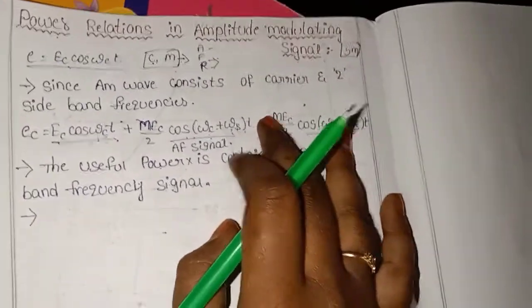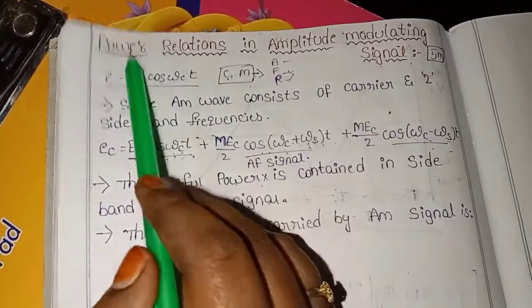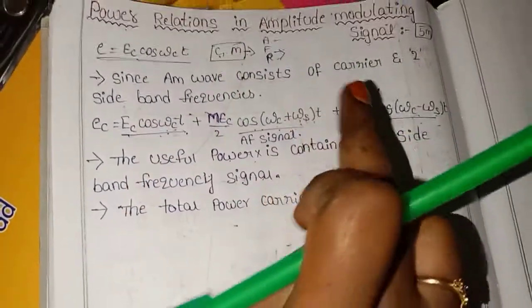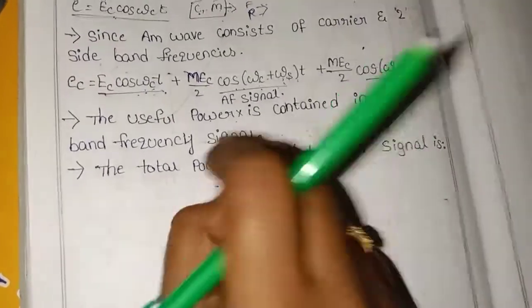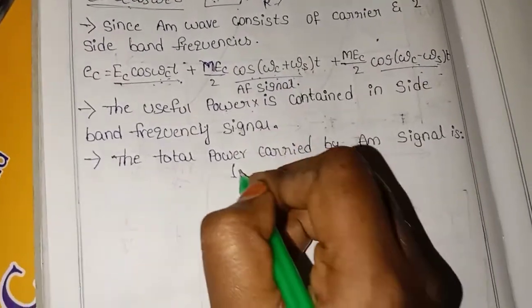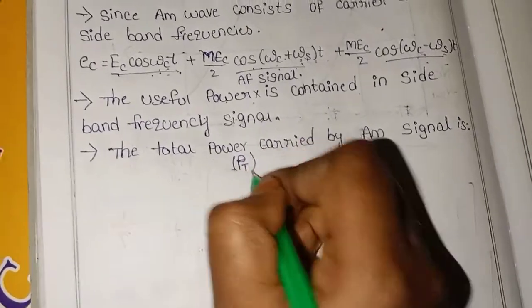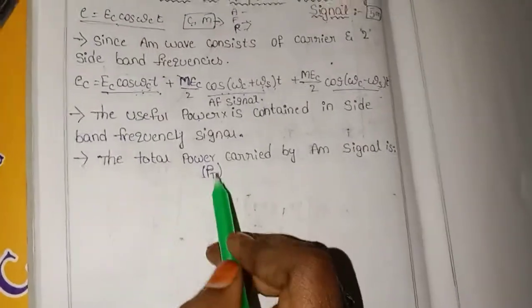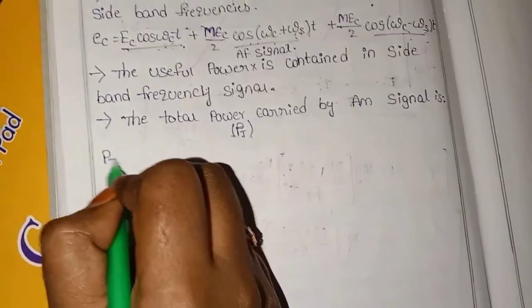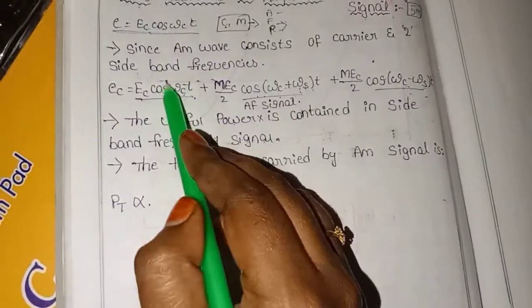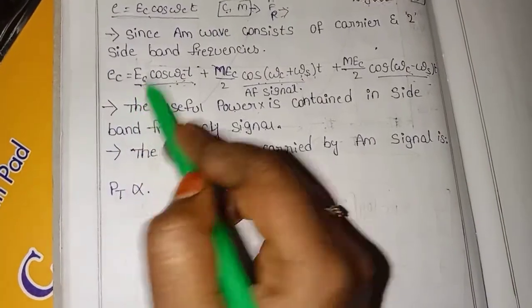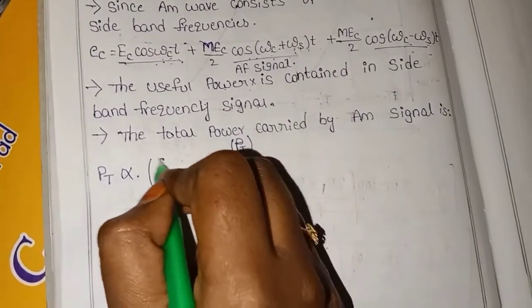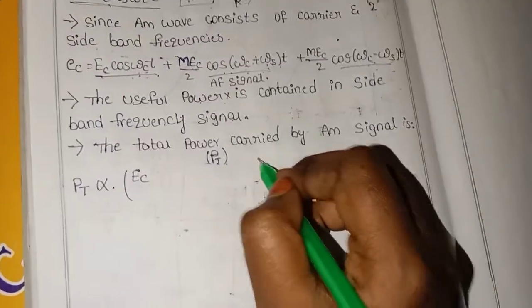Now, let's look at total power. Total power means the total amount of energy carried by the AM signal. Total power is PT, which represents all power in the AM signal. PT is proportional to the carrier signal EC.